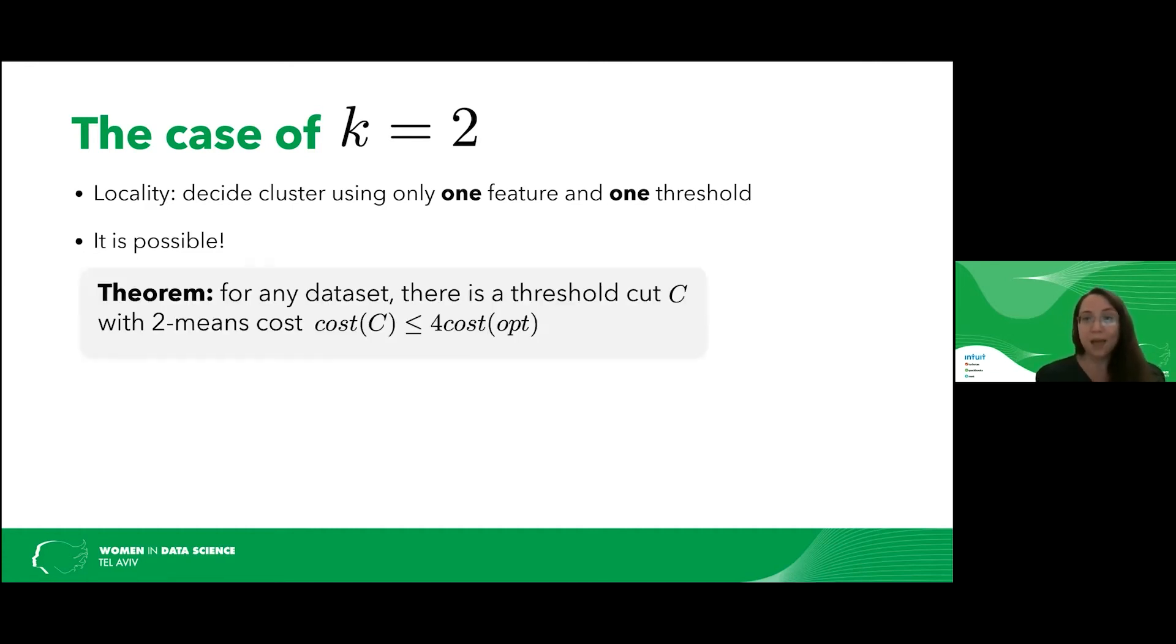What do I mean by that? I mean that we were able to prove the following theorem. We were able to show that for any data set, there is always a threshold cut, some clustering that depends on only one feature and one threshold, such that the cost is at most four times the optimal one. So notice that we have an approximation algorithm that is independent of the dimension and the number of points. And it's only four. It's a pretty small constant. This theorem immediately also gives us an efficient algorithm. Let's go over all possible cuts. And this can be done efficiently using dynamic programming.